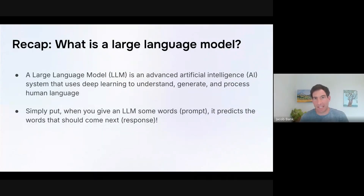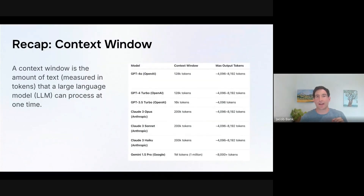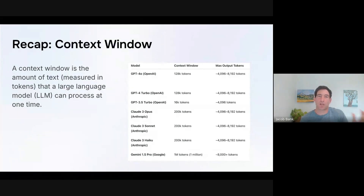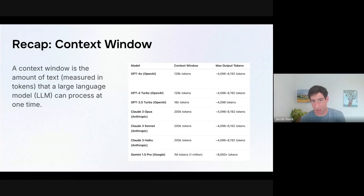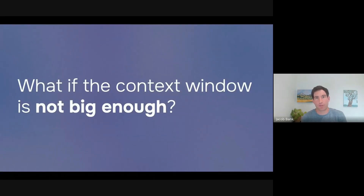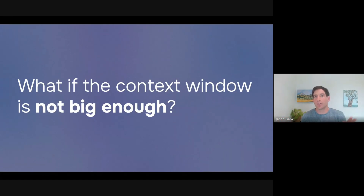We talked about one critical limitation of AI models — their context window. The context window refers to how large the input text can be in the prompt, and there's also a limit on the amount of text that can be produced as the output. I have a table on this slide showing for some last-generation models what the context window is — how many tokens or words you can put in as a prompt, and how many you can get back. This raises the question: what do I do if the context window is not big enough for my task? What if I want to use hundreds of pages of information or all the blog posts my company has ever written?